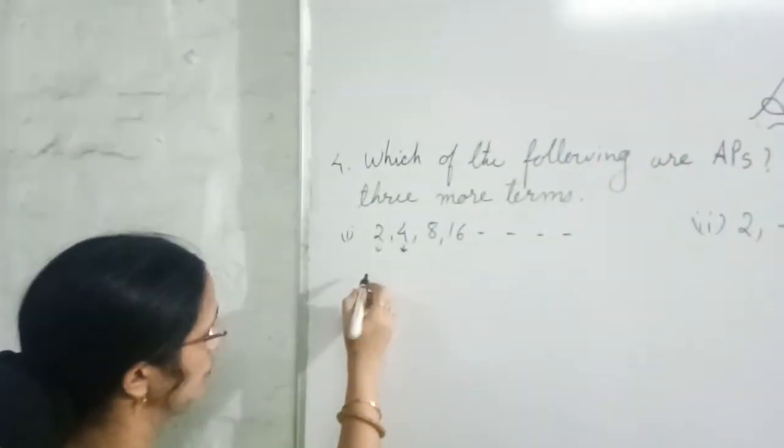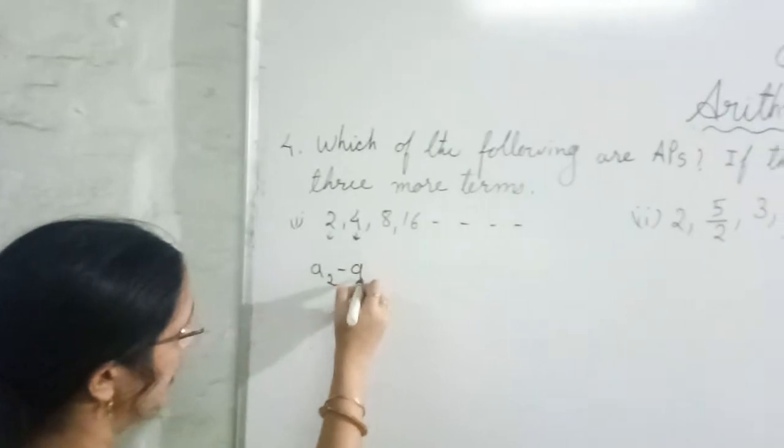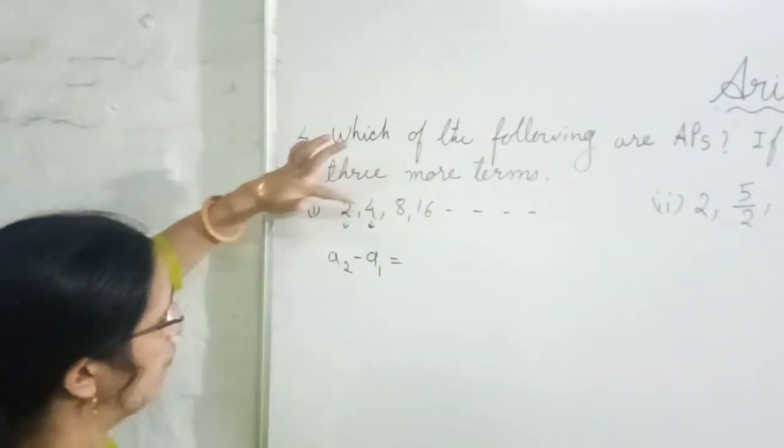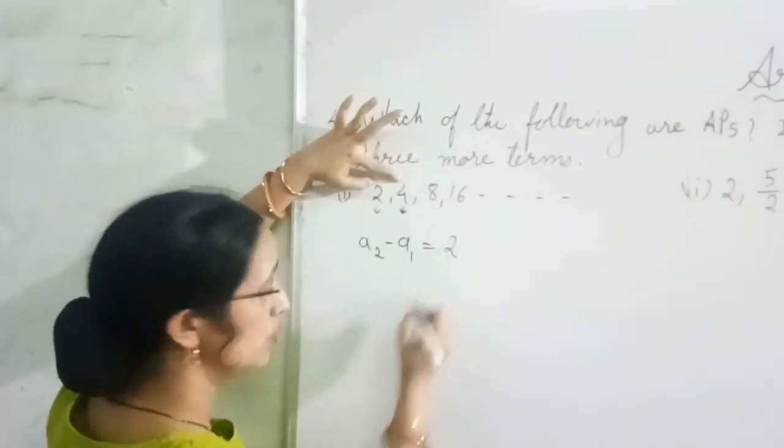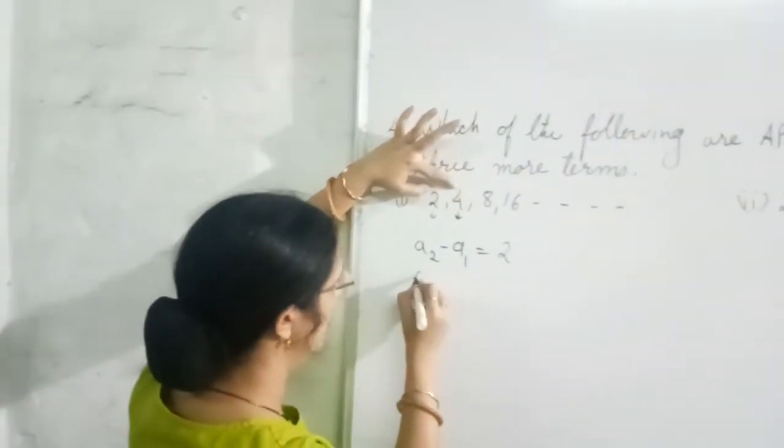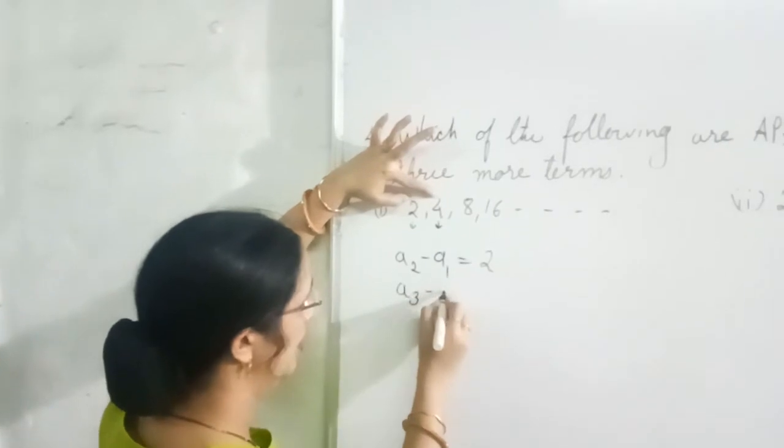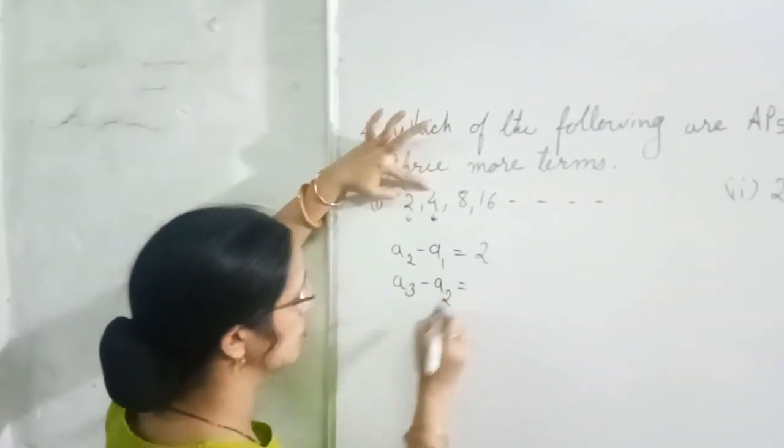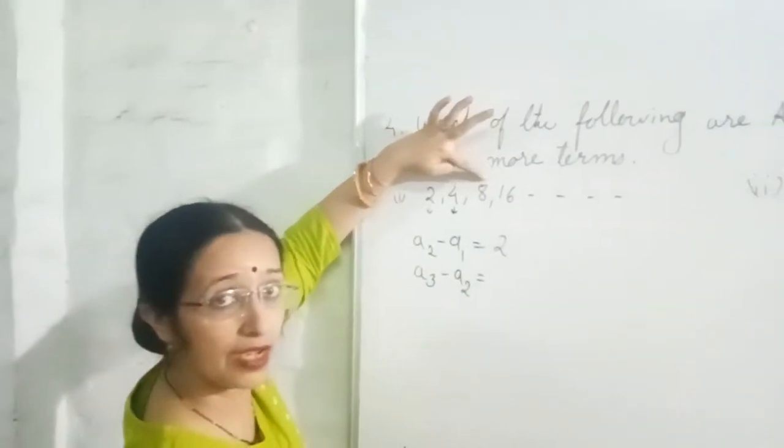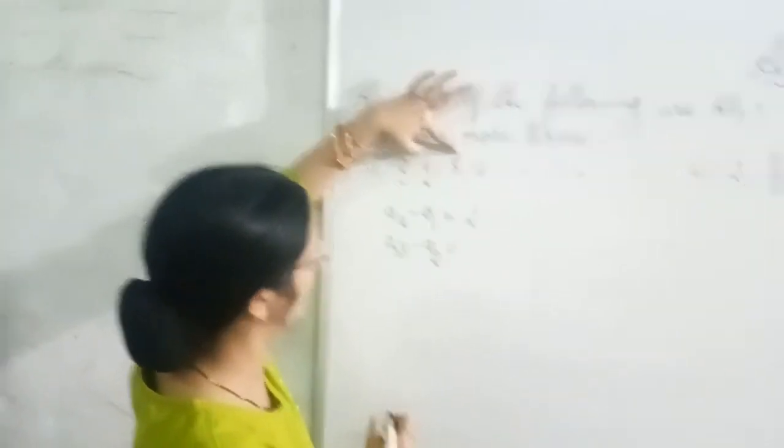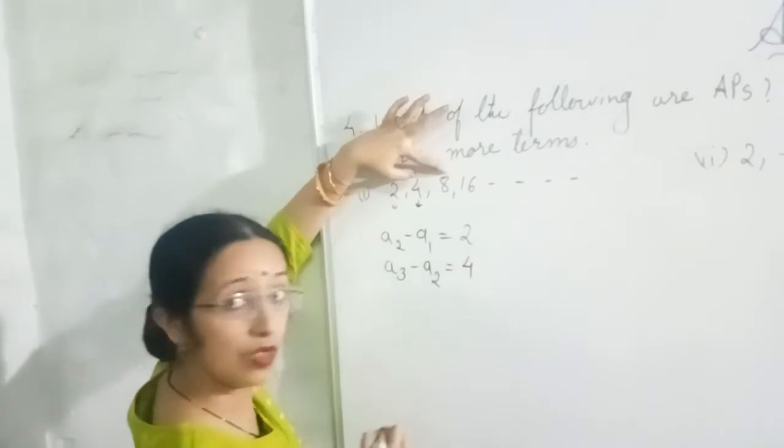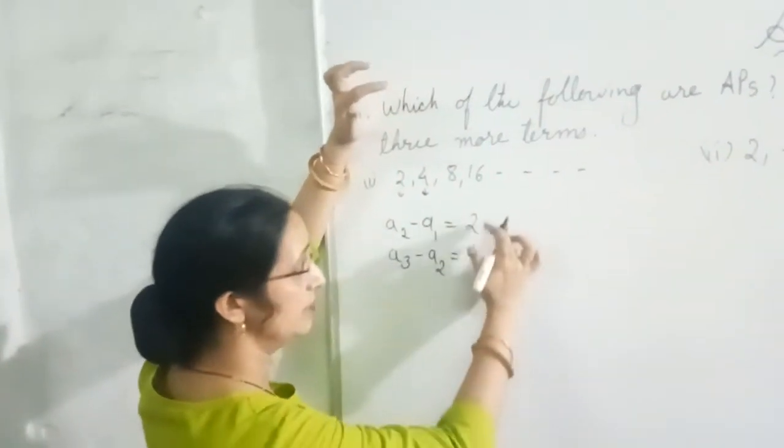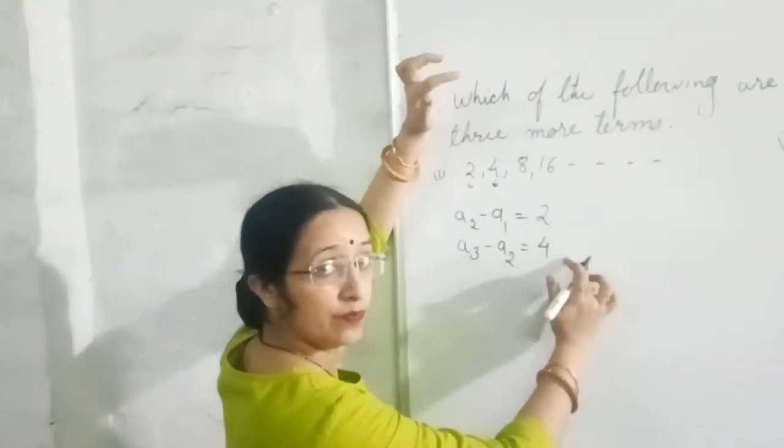A2 minus A1 means 4 minus 2. So answer you are getting 2. Then we will write A3 minus A2. Now A3 is 8, and A2 is 4. So 8 minus 4, what is coming? 4. Is common difference coming same? No.